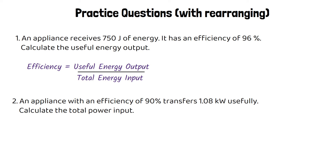Using the same equation, our efficiency of 96% converts back to a decimal of 0.96. That equals the useful energy output over the total energy input of 750. Rearranging gives us 0.96 times 750, so the useful energy output is 720 joules.